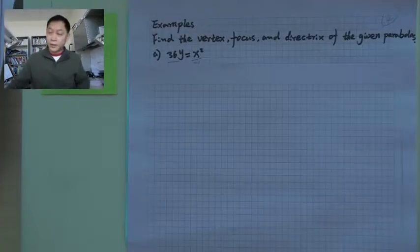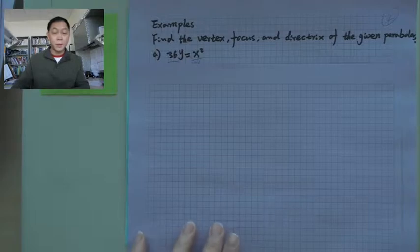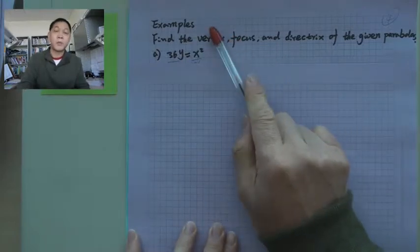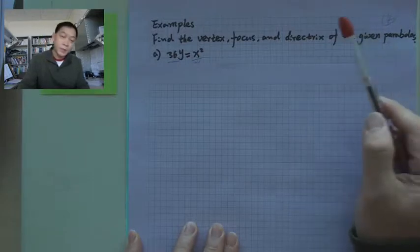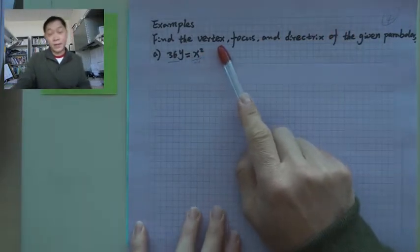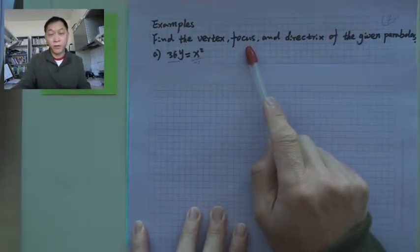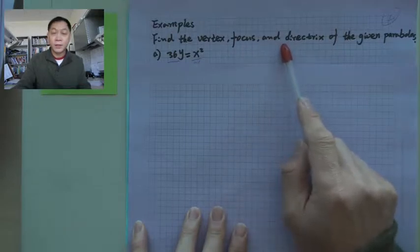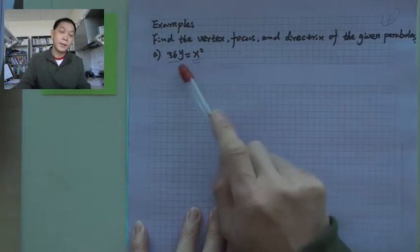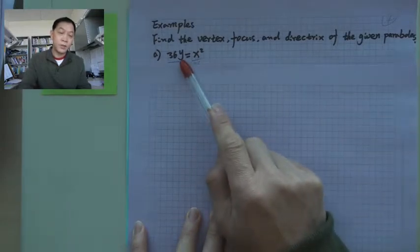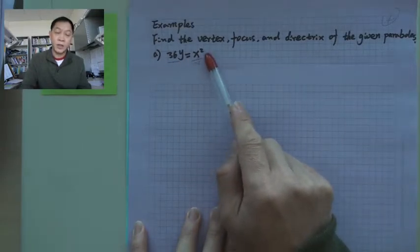In this lecture, we will talk about examples of parabolas. The first example is find the vertex, focus, and directrix of the given parabola: 36y equals x squared.